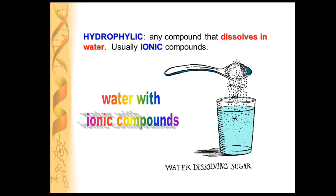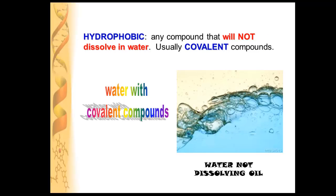Two other terms you need to know are hydrophilic and hydrophobic. Hydrophilic means water-loving — a hydrophilic compound is any compound that can be dissolved by water, usually true of ionic compounds. Hydrophobic compounds don't dissolve in water, just like oil won't dissolve in water — usually covalent compounds are hydrophobic, as they're harder to steal away from each other.